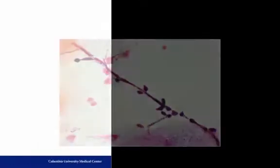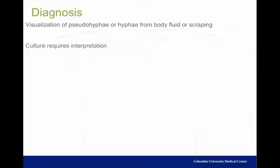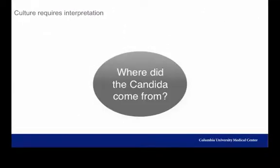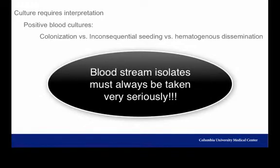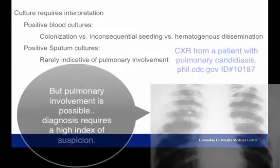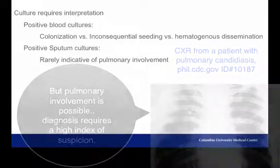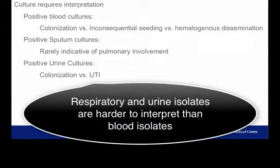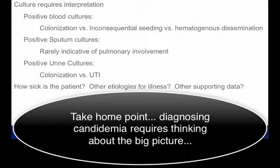The diagnosis of candidiasis is established by direct visualization of hyphae. Identification of yeast forms is less helpful, since yeast exists in the normal flora. Although Candida is readily cultured, this brings up a diagnostic challenge: one must determine whether bloodstream isolates represent local colonization or inconsequential catheter seeding versus true hematogenous dissemination. Recovery of Candida from sputum is virtually never indicative of underlying pulmonary candidiasis, as Candida is very common in the pharynx. Candida in the urine may represent benign bladder colonization rather than a true urinary tract infection.